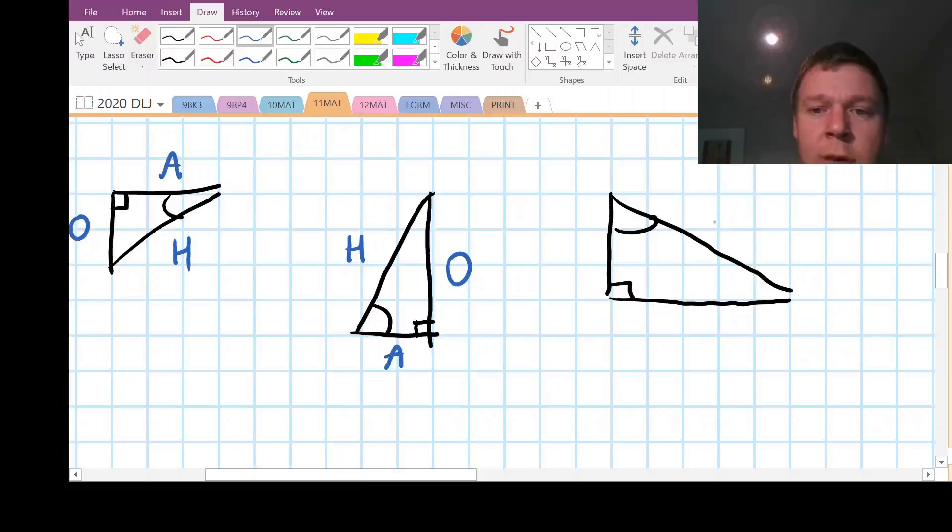And this triangle, our long side is our hypotenuse. Attached to the angle. Opposite the angle.